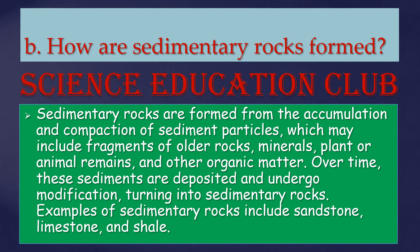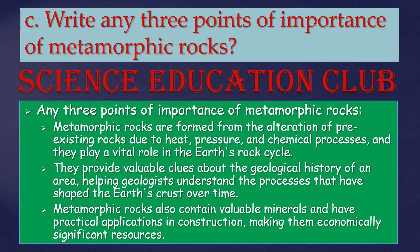How are sedimentary rocks formed? Sedimentary rocks are formed from the accumulation and compaction of sediment particles, which may include fragments of other rocks, minerals, plants or animal remains, and other organic matter. Over time, these sediments are deposited and undergo modification, turning into sedimentary rocks. Examples include sandstone, limestone, and shale.